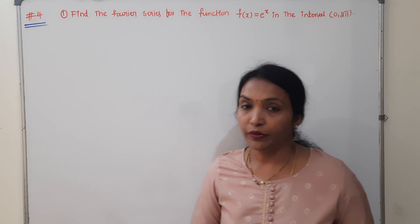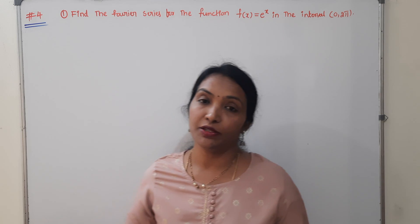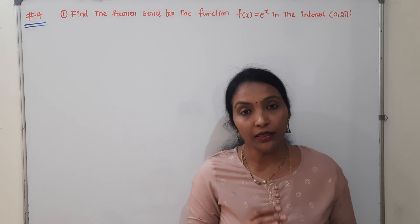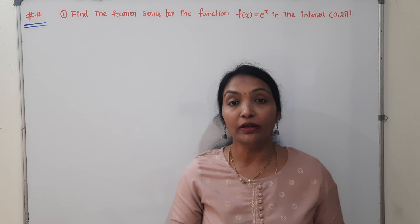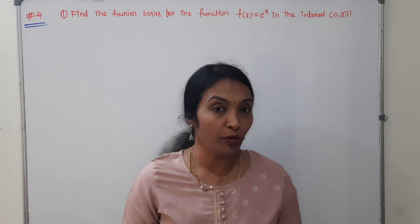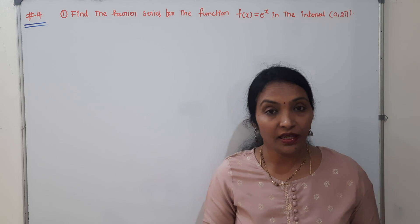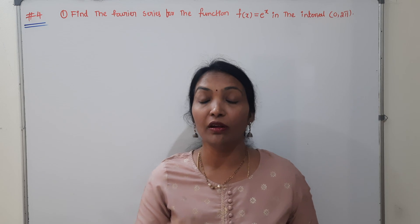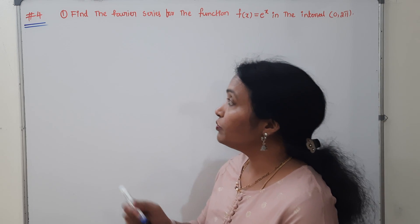Hi all, in this video we are going to do the fourth class in the Fourier series. We are going to use the Fourier series as an introduction to formulas. We are going to identify problem types — this is a type 1 problem. The limits are 0 to 2π. This is from the previous year question paper. Listen carefully, this is very very important.